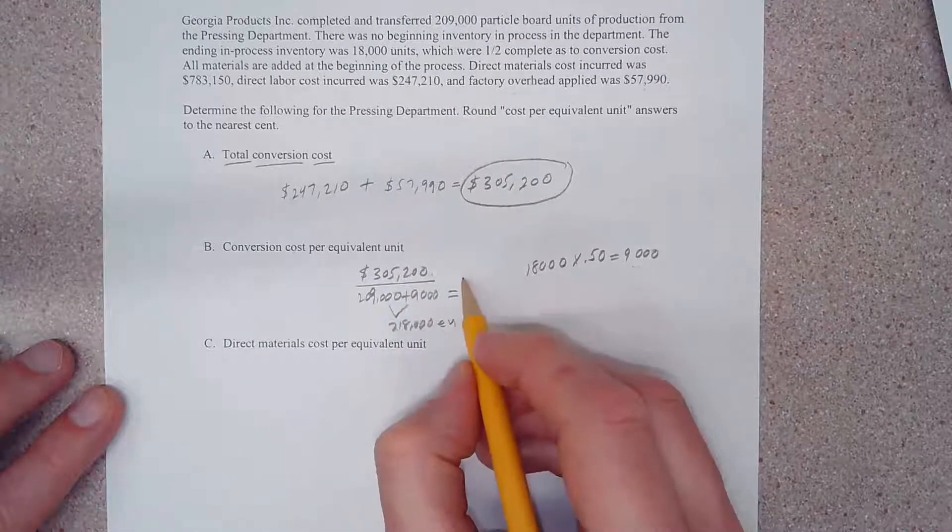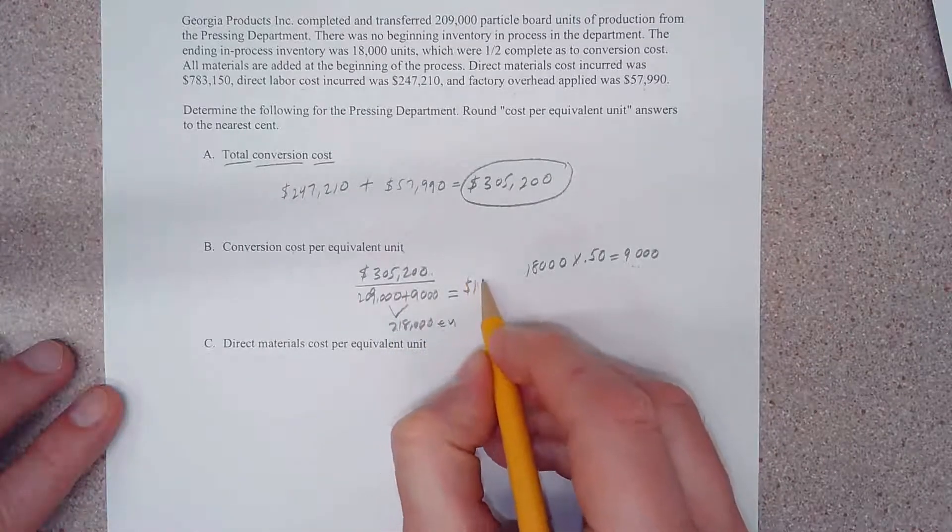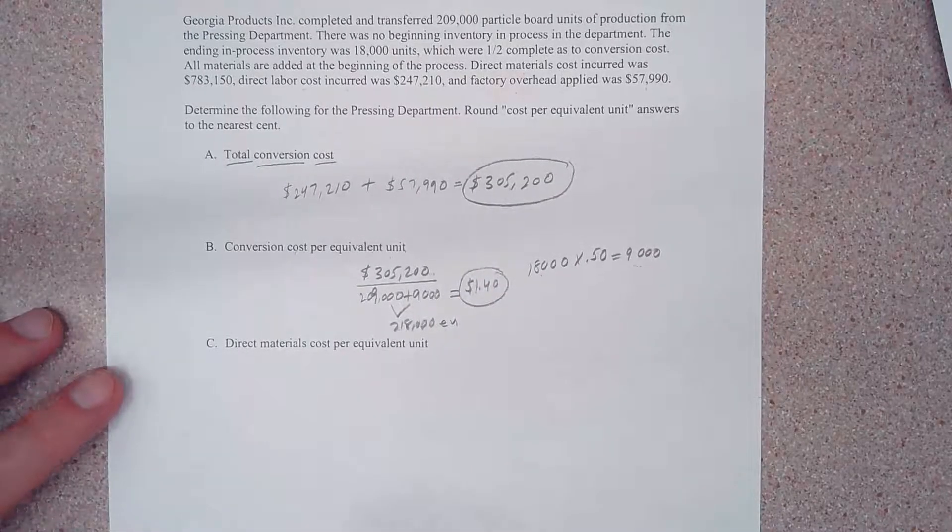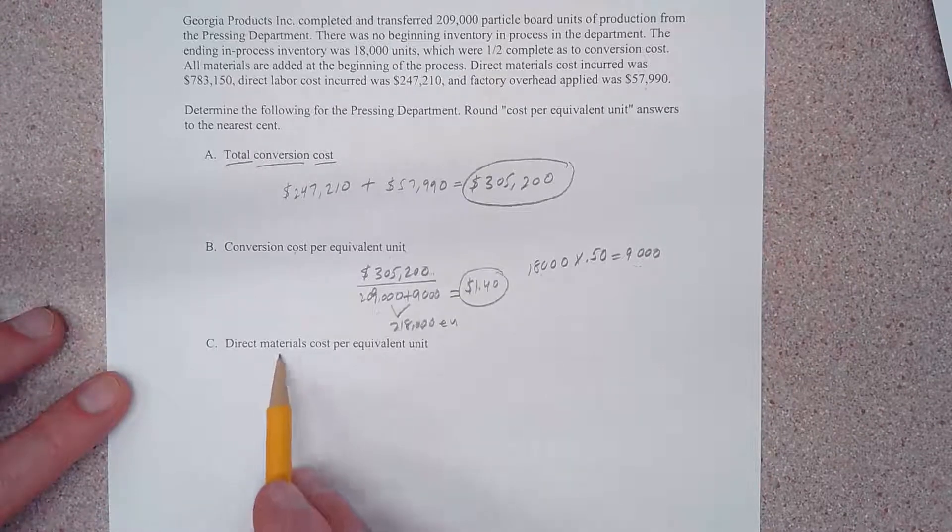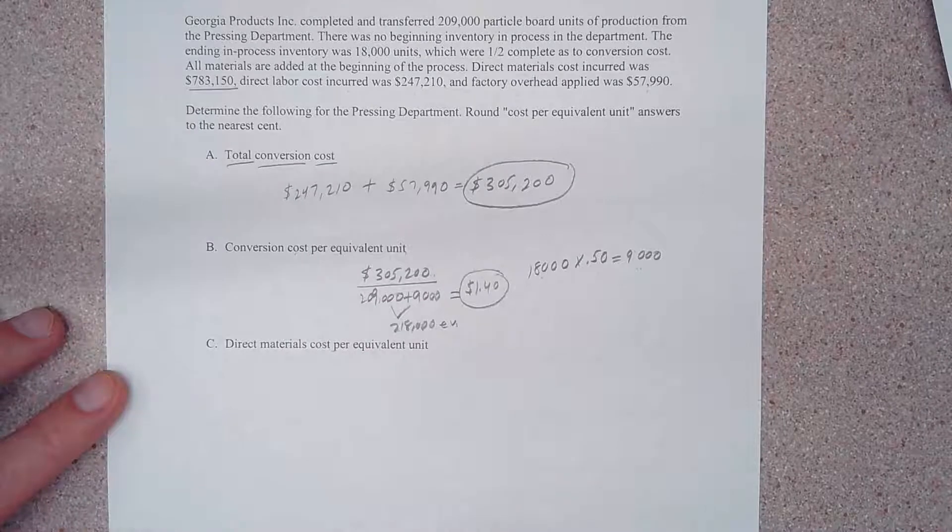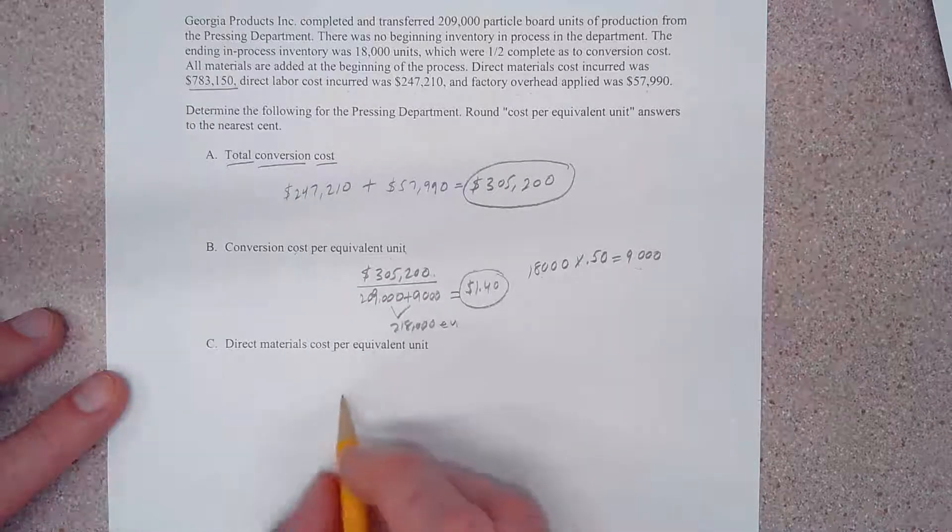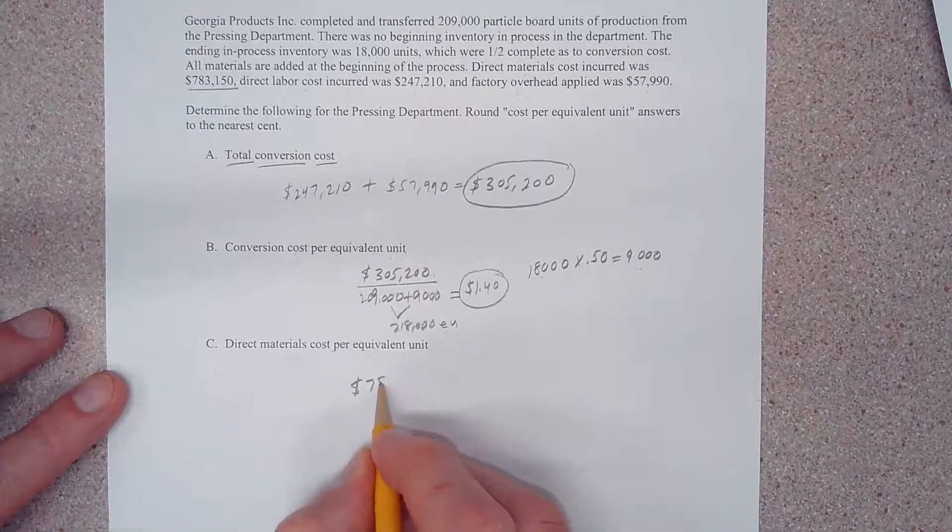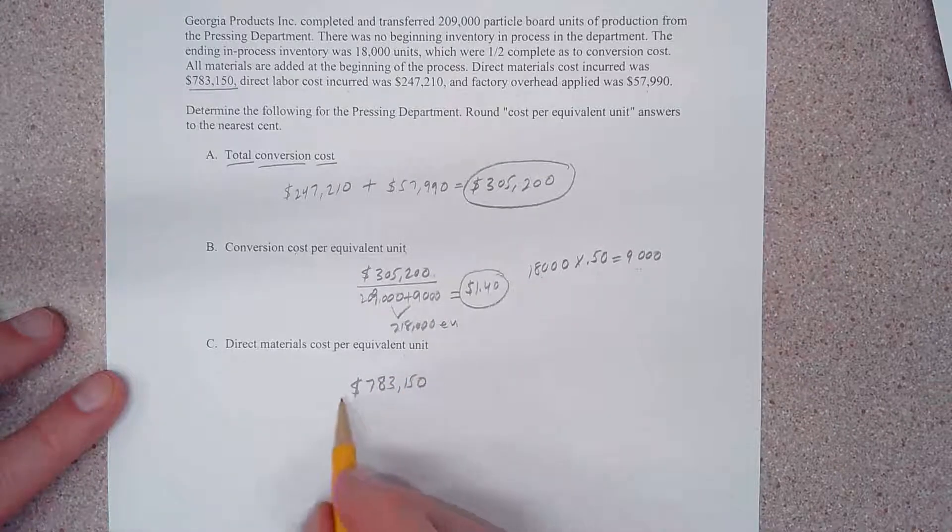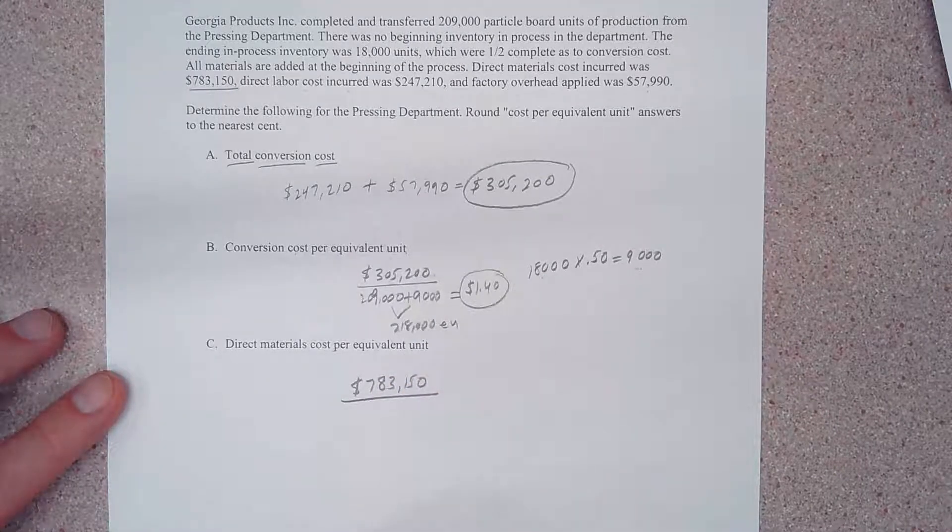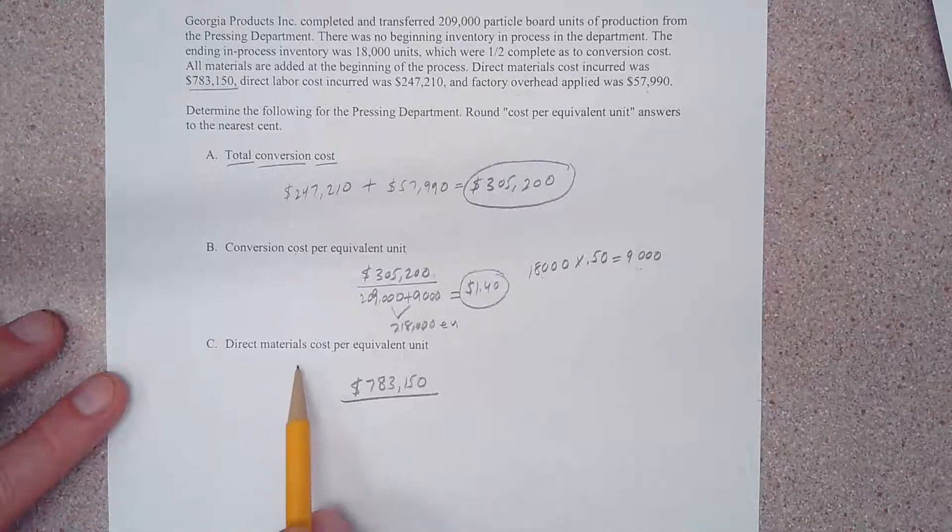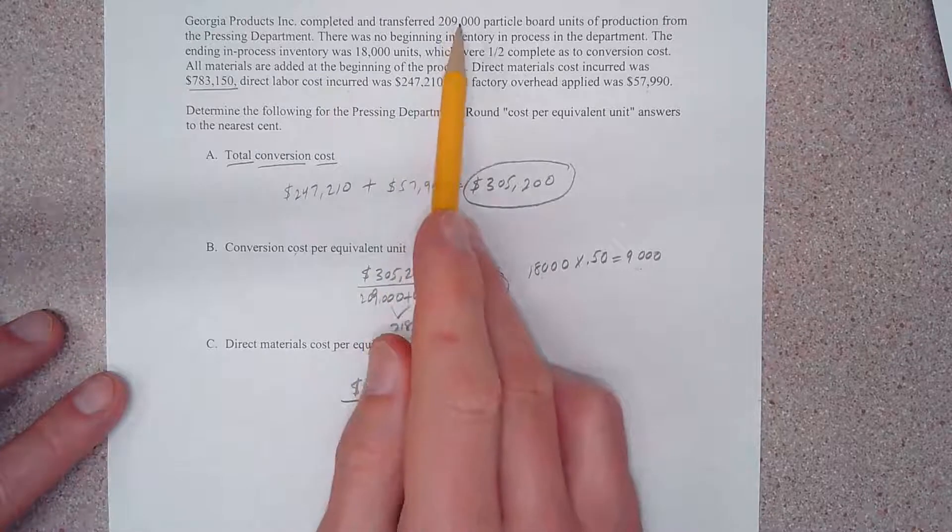Okay, direct materials cost per equivalent unit. Well now we are going to use the $783,150 and we don't have to add anything to it. We can just plot it as our numerator.